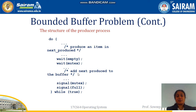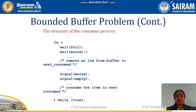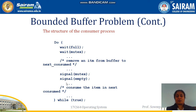Once both wait conditions are satisfied, the producer writes the next item to the bounded buffer. Once the producer writes the data, signal(mutex) and signal(full) are given so the consumer is notified that the bounded buffer has been filled. On the consumer side, it waits for full until the buffer is full, and once notified, it removes data from the bounded buffer. After reading, it signals mutex and signals empty so the producer can write again.